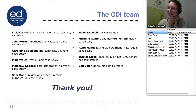Ellen has two questions: first, whether it would be possible to get the presentation as an electronic version to share with colleagues who weren't able to follow the briefing. Second, regarding the DAC codes and OECD categories, are there any efforts within the OECD to make changes to these, or are they fixed? She notes she's not familiar with the discussion and wonders whether other sectors face similar problems in categorizing aid codes.